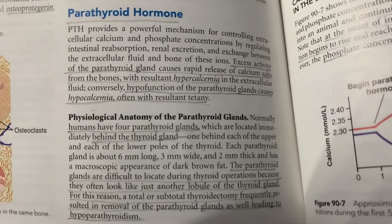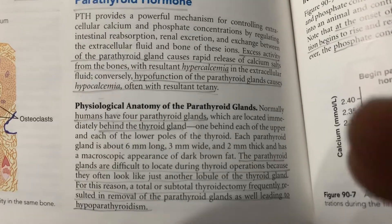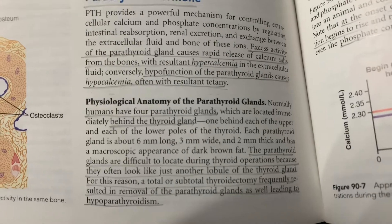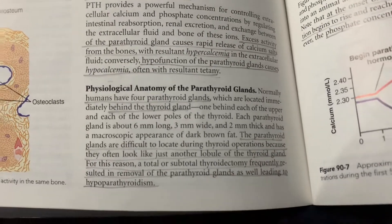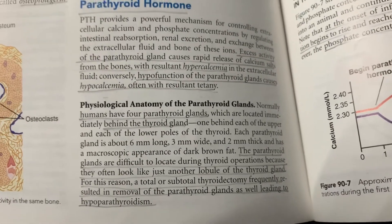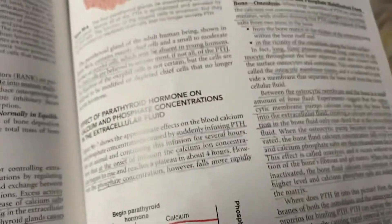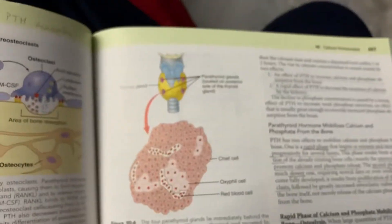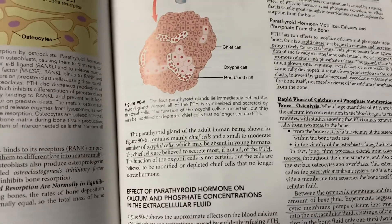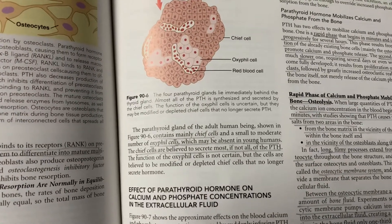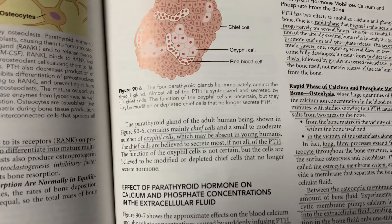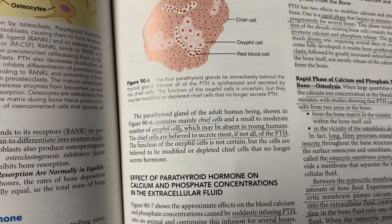Humans have four parathyroid glands — two located behind each lobe of the thyroid gland. They are difficult to locate during thyroid operations because they resemble another lobule of the thyroid. A total or subtotal thyroidectomy frequently results in removal of the parathyroid glands, leading to hypoparathyroidism. The parathyroid gland contains mainly chief cells, which secrete PTH, and oxyphil cells, which are modified chief cells that no longer secrete PTH.